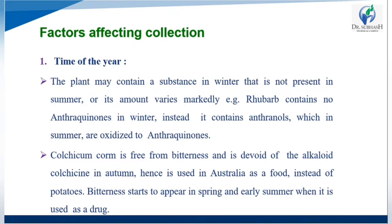Now we see the factors affecting collection. The first factor is time of year. A plant may contain a substance in winter that is not present in summer, or its amount may vary. For example, rhubarb contains no anthraquinone in winter; instead it contains anthranol, which in summer is oxidized to anthraquinone. So rhubarb has anthranol in winter and anthraquinone only in summer.